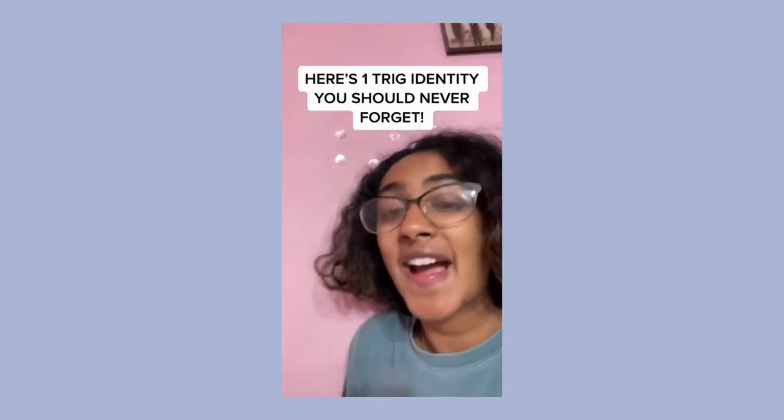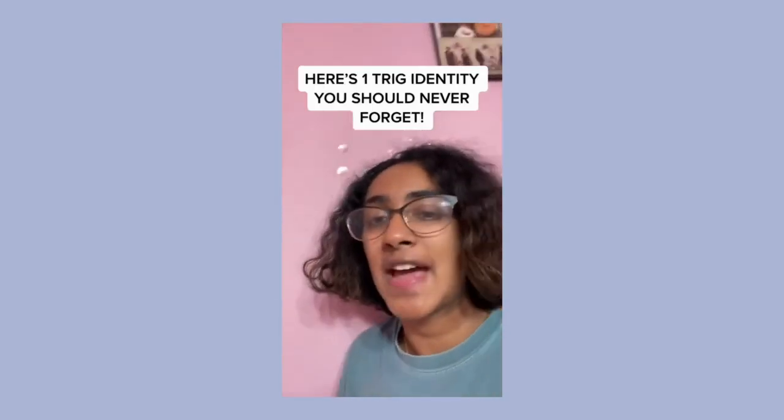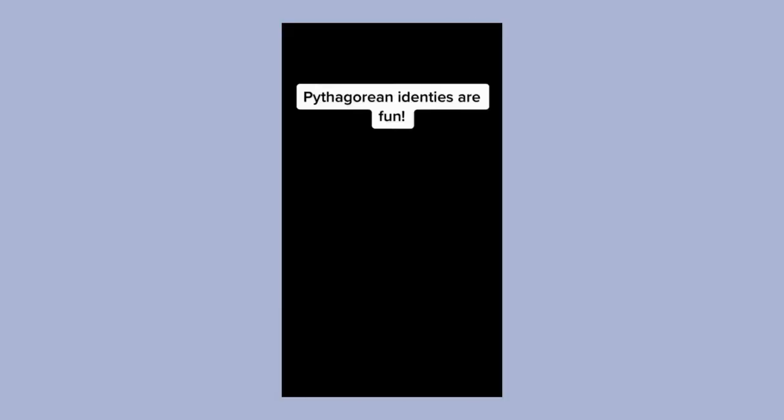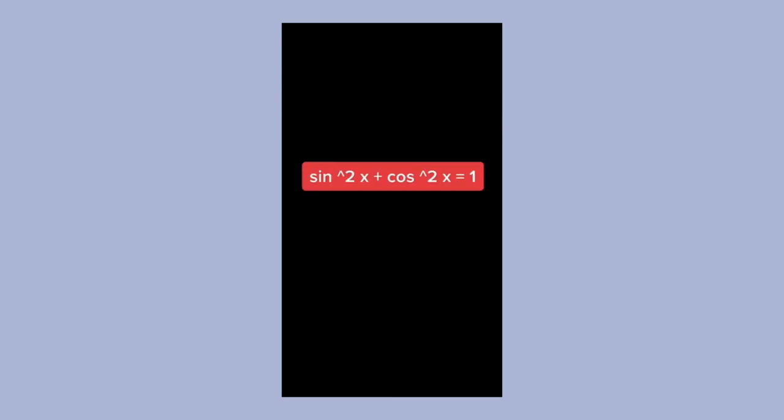Here's one trig identity that you should never forget. Pythagorean identities are fun: sine squared x plus cosine squared x equals 1.